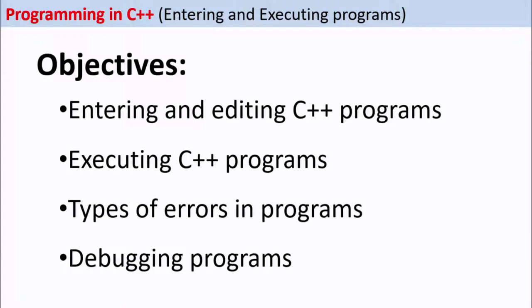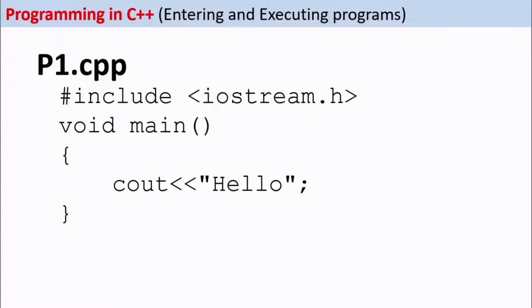We will also cover types of errors in C++ programs and how to debug C++ programs. Debugging means removing the errors from C++ programs. The first program we are going to see is a very simple program — hello world. You must have seen this simple program in the beginning of your lessons in theory. Today we are going to run this program and slowly improve on it and write some other programs also.